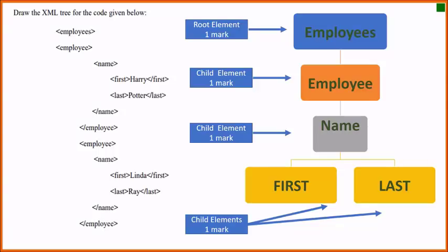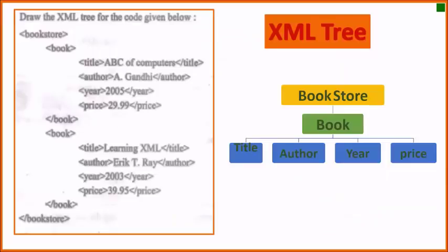Each portion carries proper marks as per the mark distribution. See one more question from previous year question papers. Here, 'Bookstore' is the root element, 'Book' is the child element of 'Bookstore', and 'Title', 'Author', 'Year', 'Price' are all at one level because they are nested under 'Book'. So this is the tree for this question.